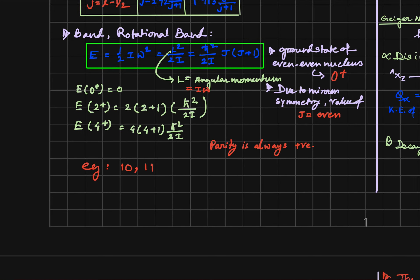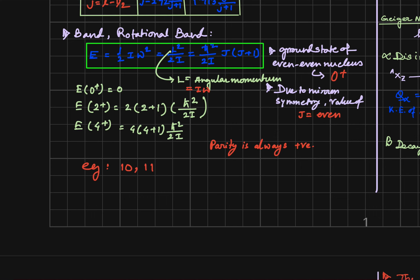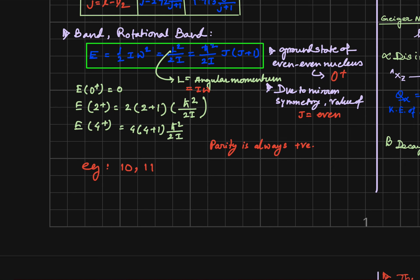We know that any nucleus rotates and gives rise to rotational bands. For exam purposes, we have to remember the formula for rotational bands. The formula is E = ℏ²/(2I) × J(J+1). The J value is always even for rotational bands, and the parity is always positive. So this applies for J = 0, J = 2, and J = 4.